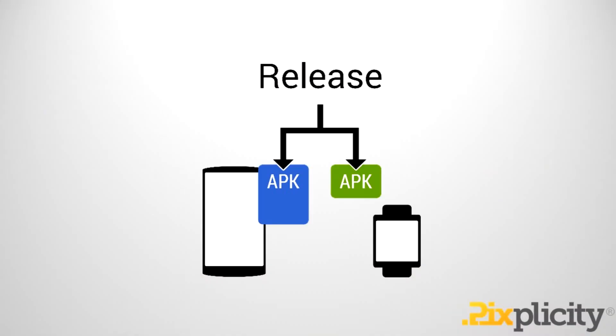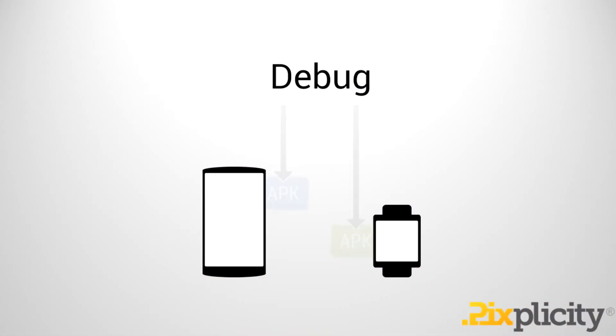It's important to bear in mind how applications are installed onto Android Wear. Users don't directly install applications on Android Wear itself — they do so through interactions on their host device. On Google Play they select to install an application onto their host device, and that in turn through the Android Wear companion app installs the application over Bluetooth. For developers it's slightly different: you can attach your Android Wear device through USB and debug that way, or deploy a debug application onto your watch. For devices that don't support a wired connection, like the Moto 360, you can debug over Bluetooth through your host device.